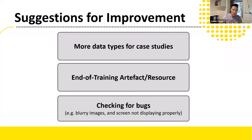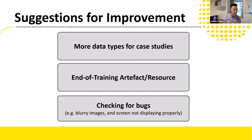There are suggestions for improvement. A fair number of HDRs asked for more data types for the case studies so that it appeals to a wider group of audience. They are also looking for some kind of takeaway — a one or two page key takeaways document with important things covered as well as where to look for more information. And as expected with a prototype, there will be bugs — blurry images and screens not displaying properly — which are things we will seriously look into as we move to the next development phase.